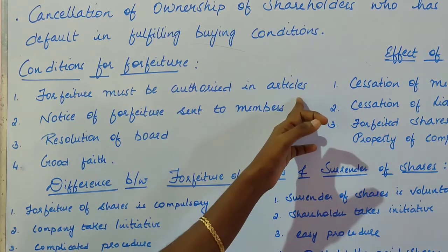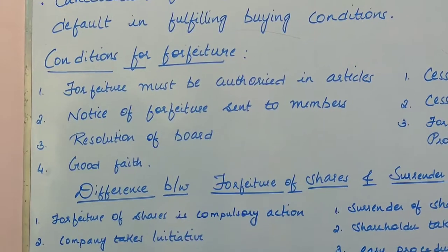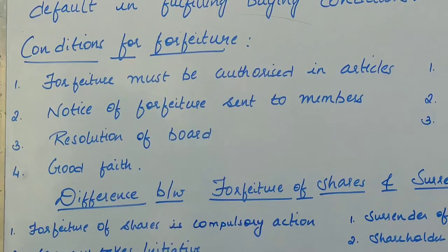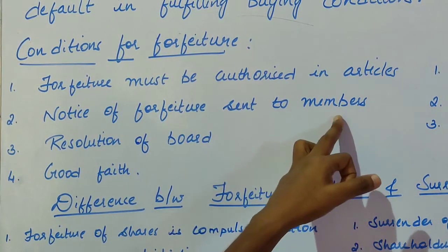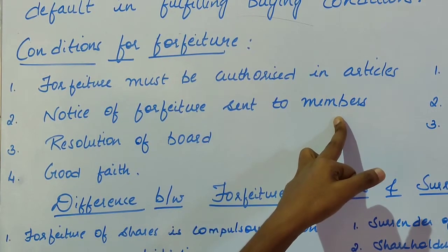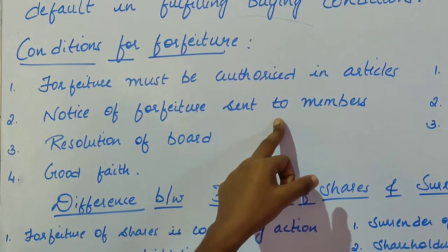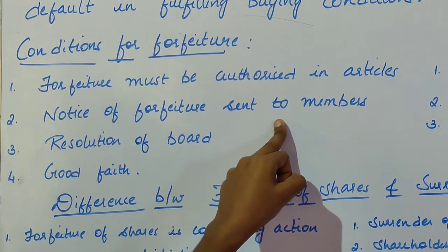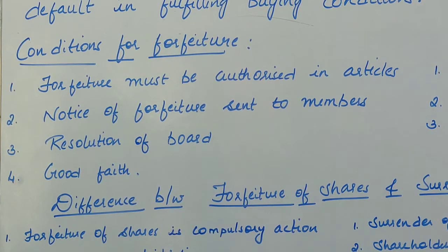Only then the company can go for forfeiture. The second condition is notice of forfeiture should be sent to members. If a company is going for forfeiture, it should send the notice of forfeiture to the defaulting members — those people who have to pay the unpaid calls due. This notice should mention that they have to pay the unpaid amount on shares as early as possible, or their shares will be forfeited.